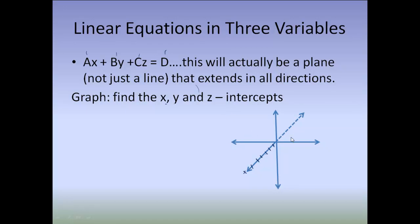And then a similar thing happens with my Y axis. When I am plotting on my Y axis, the value of my X is 0 because I'm not forward or backwards any, and the value of my Z is 0 because I'm not up or down any. And then the same thing happens with your Z axis. When you are looking at your Z intercept, your X value is 0 because you're not forward and back, and your Y value is 0 because you're not right or left.